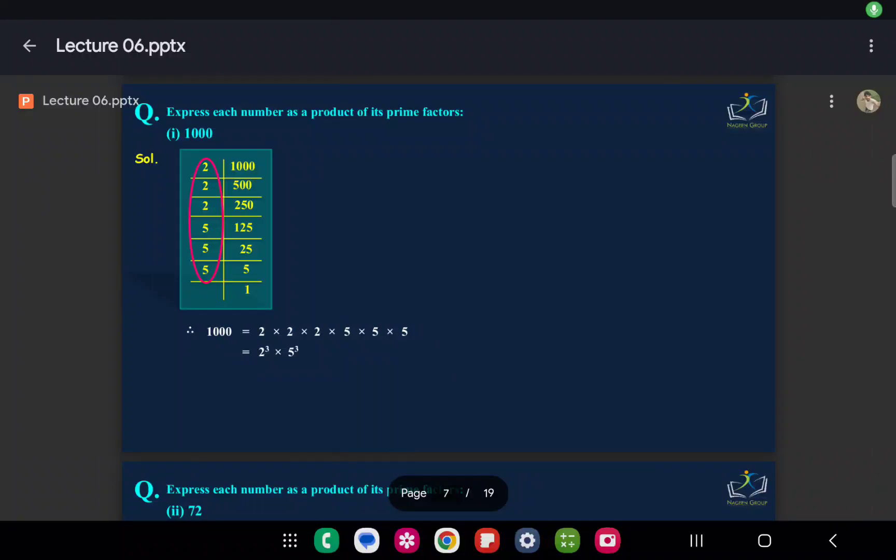An important question asked in CBSE examinations: express each number as a product of its prime factors. One problem we have taken is 1000. We have to divide by the lowest number first.